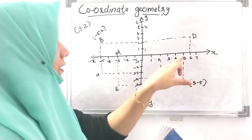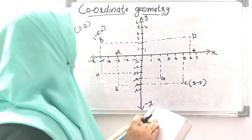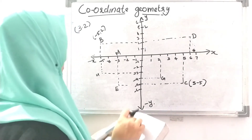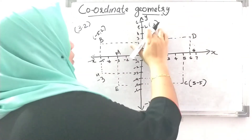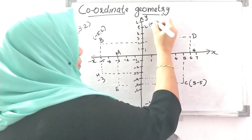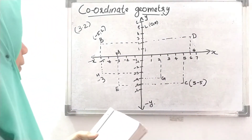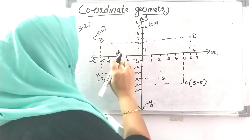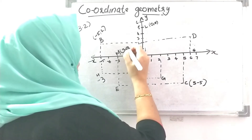The x-coordinate of point D is 6. The coordinate of point L: x is 0 and y is 5. The coordinate of point M: x is 0 and y is 0, so it is at the origin, minus 3 is 0.